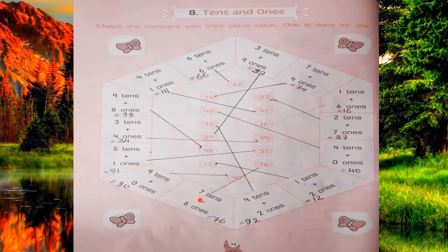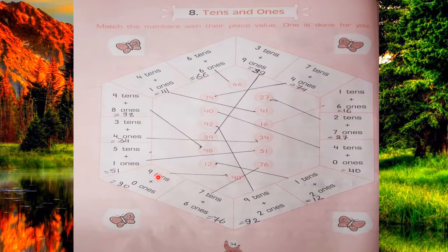Next, 7 tens and 6 ones. 7 tens is equal to 70 and 6 ones is equal to 6, so 70 plus 6 is 76. We will match with 76. Next, 9 tens and 0 ones — 0 ones means nothing, and 9 tens means 90. So we will match with 90.